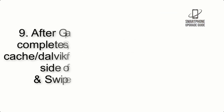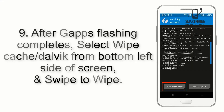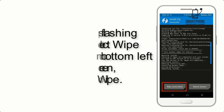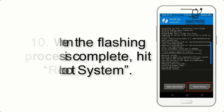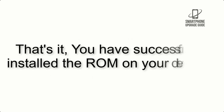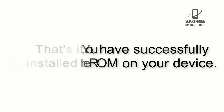Step 8: Flash the GApps zip package in the same manner. Step 9: After GApps flashing completes, select Wipe Cache and Dalvik from the bottom left side of the screen and swipe to wipe. Step 10: When the flashing process is complete, hit Reboot System. That's it — you have successfully installed the ROM on your device.